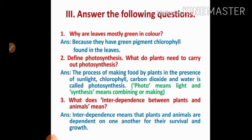Question number three: answer the following questions. First one: why are leaves mostly green in color? Answer: because they have a green pigment called chlorophyll found in the leaves. Second one: define photosynthesis. The process of making food by plants in the presence of sunlight, chlorophyll, carbon dioxide, and water is called photosynthesis. Photo means light and synthesis means combining or making. Third one: what does interdependence between plants and animals mean? Interdependence means that plants and animals are dependent on one another for their survival and growth.